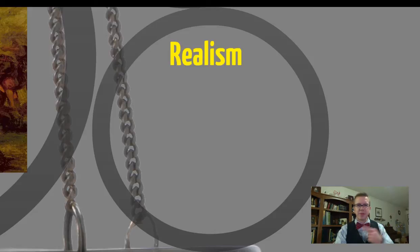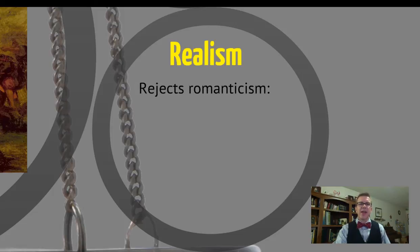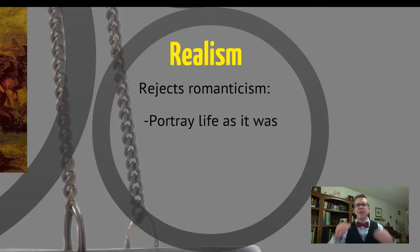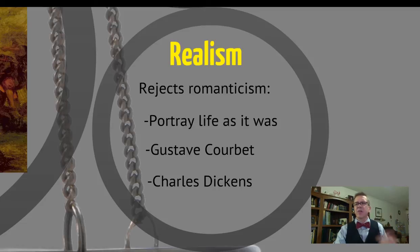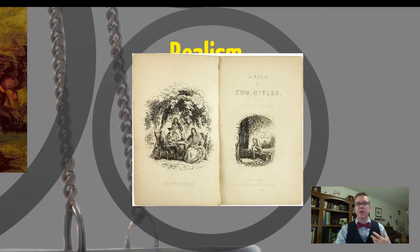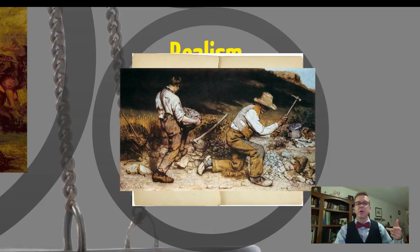Then there is realism, which becomes a reaction to the reaction that was Romanticism. Realism says: we reject Romanticism — look around, this is not what life is like. They're portraying life as it actually was. Examples from your book include the painting by Gustave Courbet — The Stonebreakers — and Charles Dickens, author of several novels including A Christmas Carol and A Tale of Two Cities.